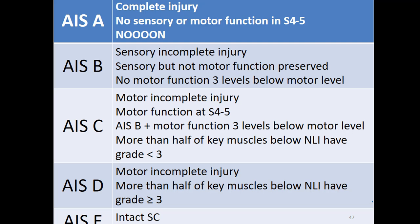Now that we are done with the practice exercises on AIS A and B and on the zone of partial preservation, let's take a look at AIS C and D. These two levels correspond to motor incomplete injuries, meaning that we have motor function at S4-5. The difference between AIS C and D is that in AIS C, most muscles below the neurological level of injury have a grade less than 3 — MMT grade 0, 1, or 2 — whereas with AIS D, most muscles have grades 3, 4, or 5, meaning better innervation.